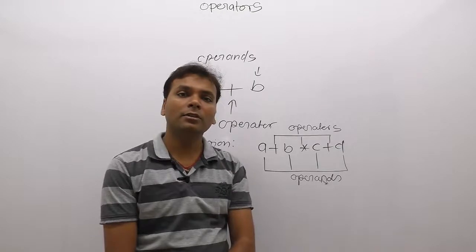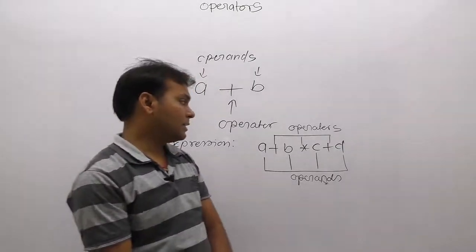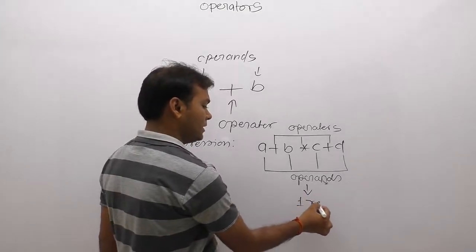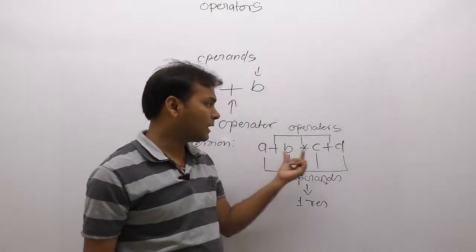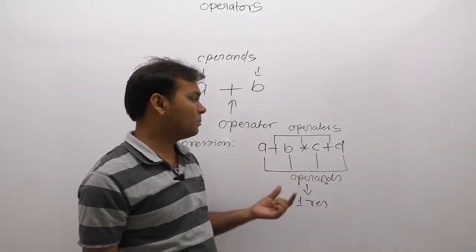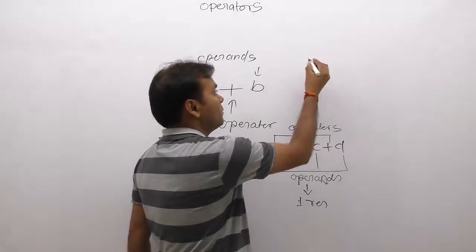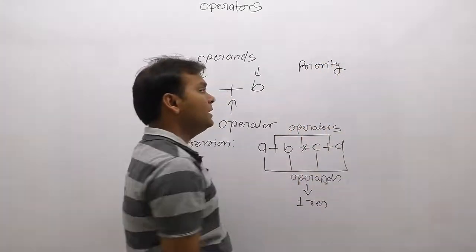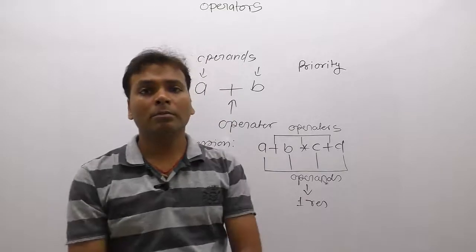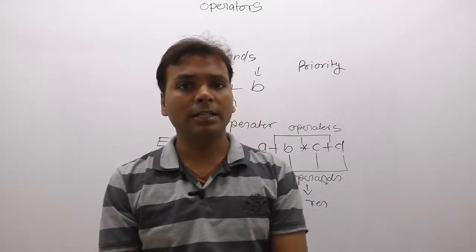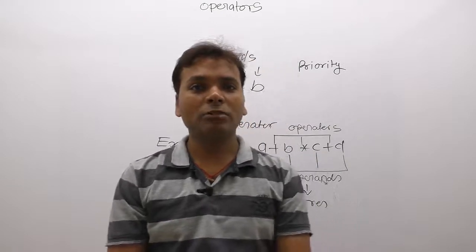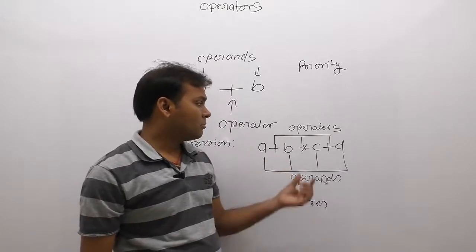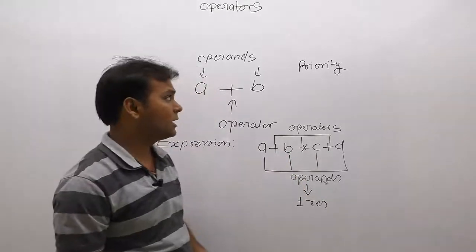In that case, any expression will always produce only a single result. For example, always apply the rules. If any expression contains more than one operator with different priorities, then priority rules apply — highest priority operators are solved before least priority operators.